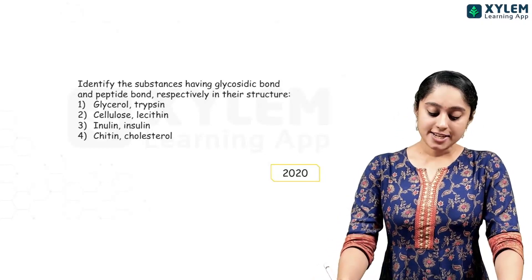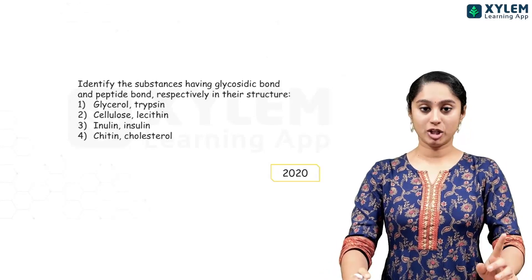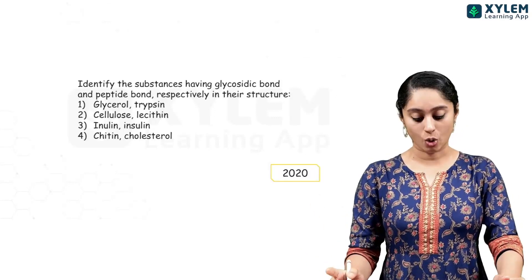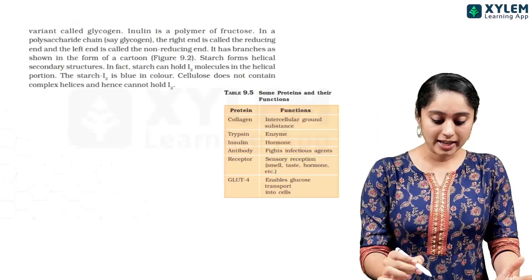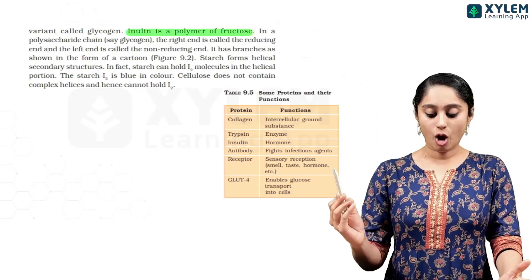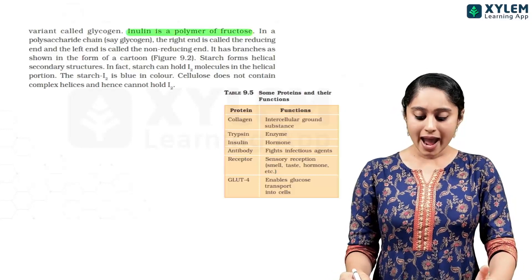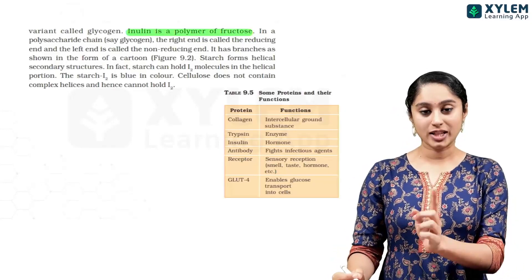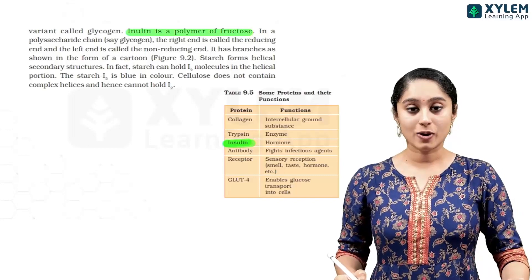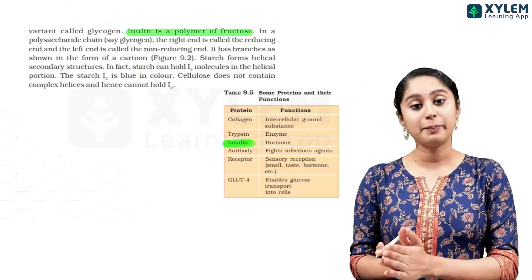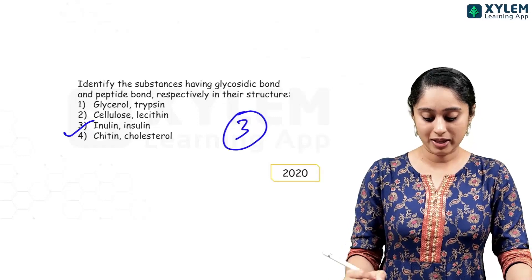From 2020, identify the substances having a glycosidic bond and a peptide bond respectively in their structure. Inulin is a polymer of fructose, so it is a polysaccharide with glycosidic bonds. Insulin is a protein — hormones are also forms of protein — so insulin has a peptide bond. Therefore inulin and insulin — option 3 — will be the right answer.